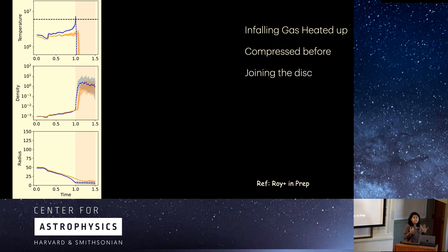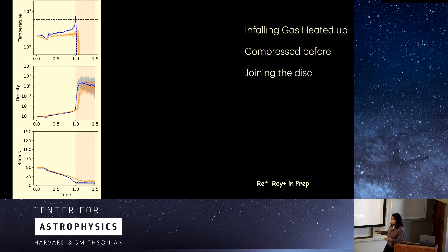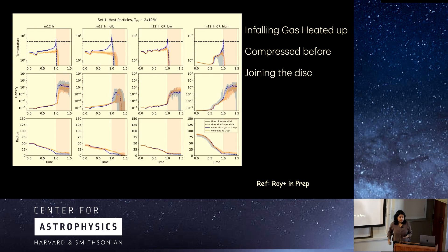The main physical mechanism is that infalling virial gas gets heated up due to compressive heating, giving rise to the super virial phase — these are the blue lines. We can see this same mechanism in all of our runs, which is why we also catch it in the no-feedback run.